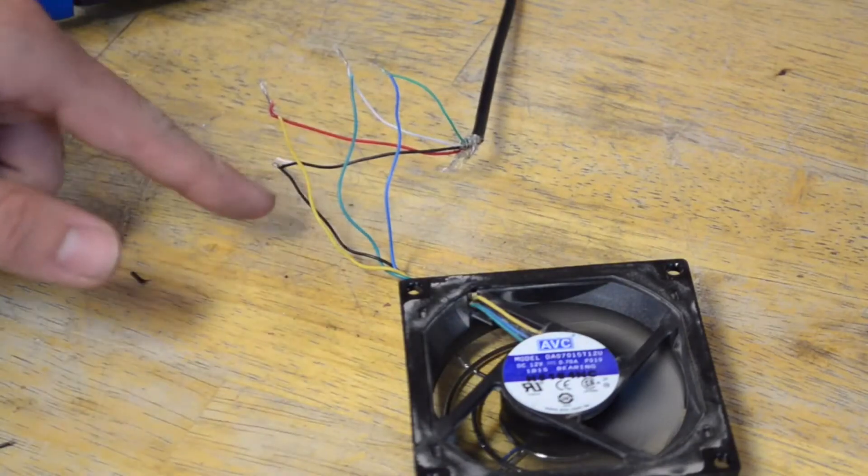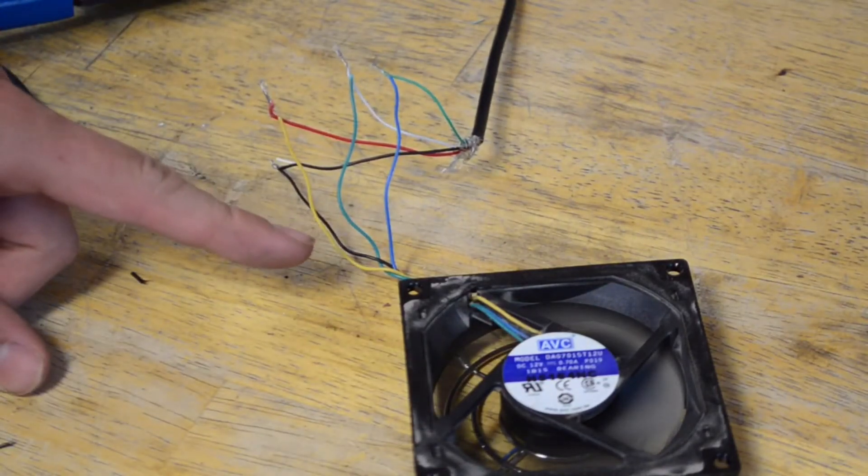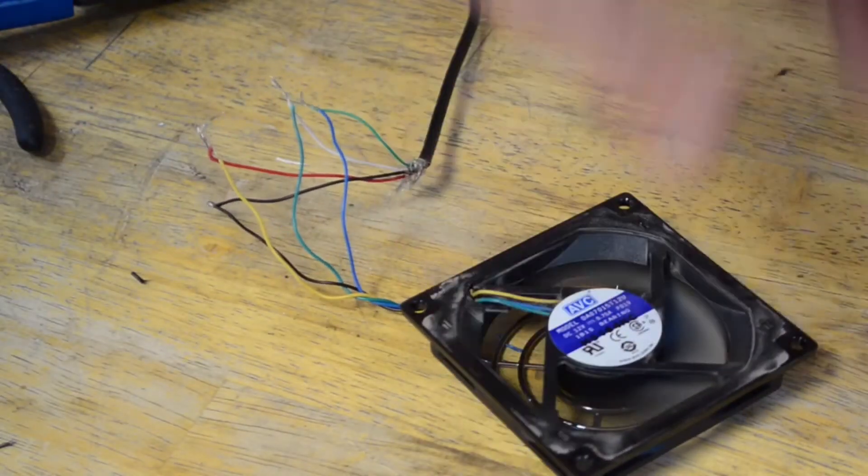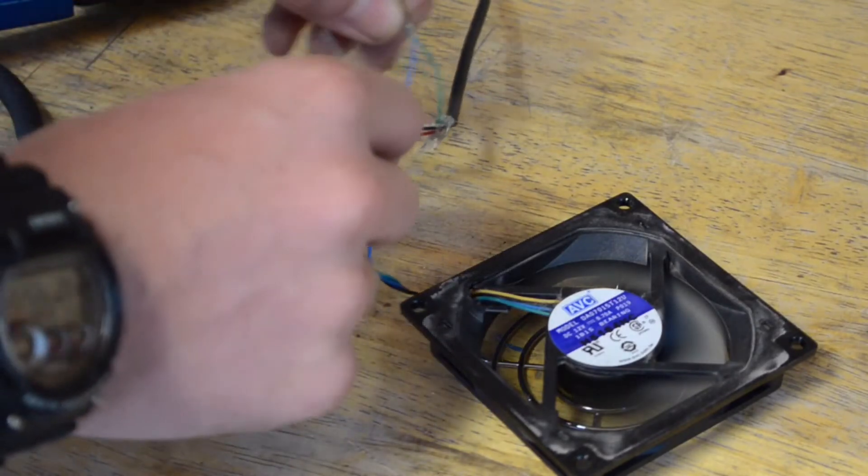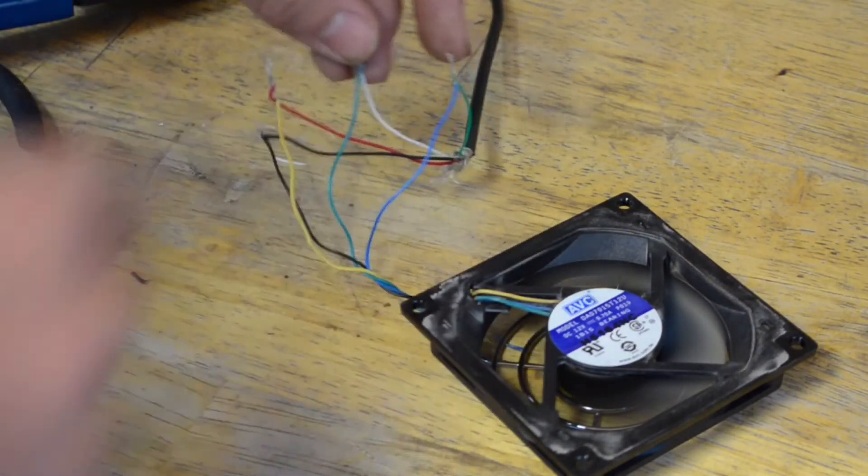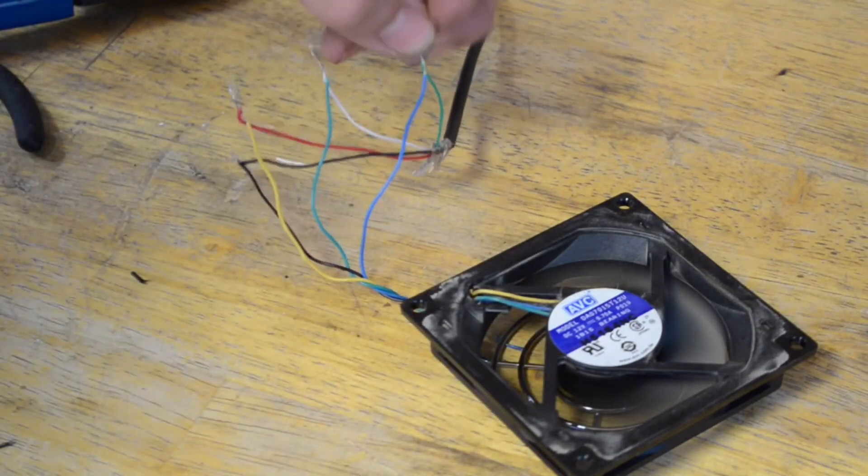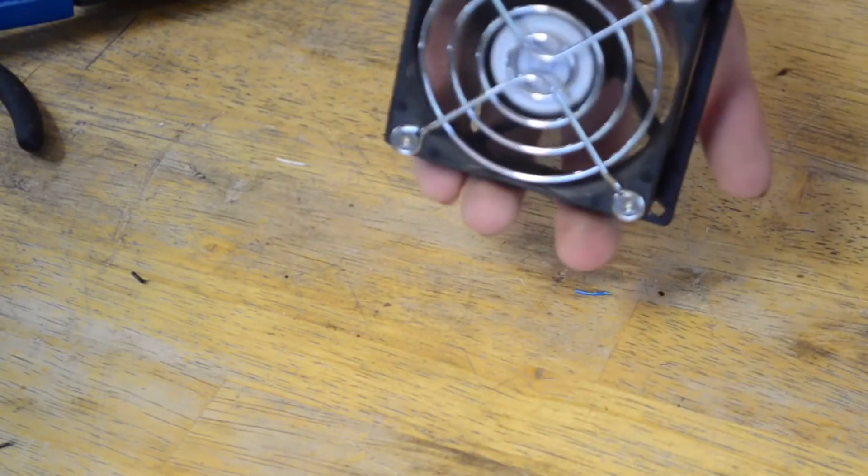Since the black and yellow wires are connected directly to the motor, the other two must be the hall sensor for the fan. After trial and error, connecting the green to the white wire on the USB and the blue to the green wire on the USB gives me a steady flowing fan.